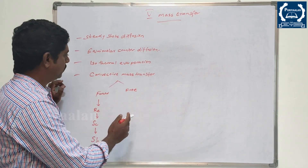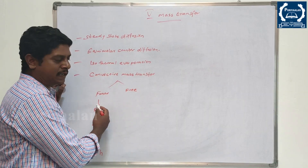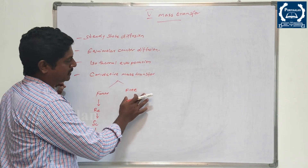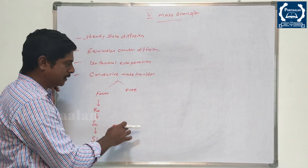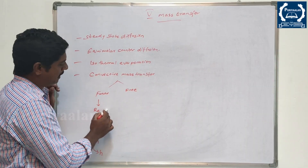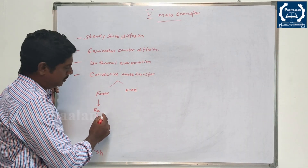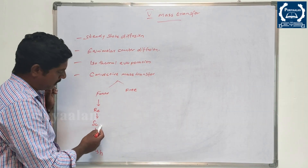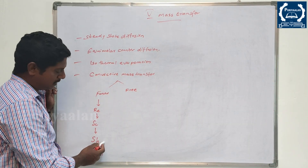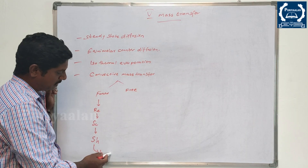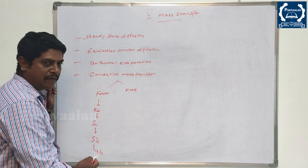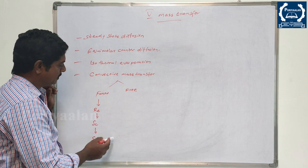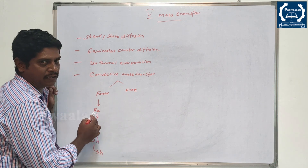For convective mass transfer, there are two types: free convective mass transfer and forced convective mass transfer. In free convection, there are no problems. In forced convection, there is the Reynolds number. Depending on the Reynolds number, we classify laminar flow or turbulent flow.